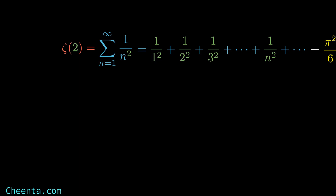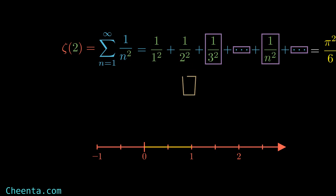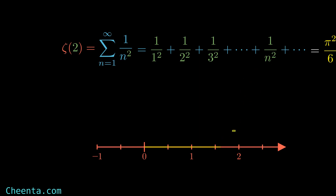To understand convergence, let's take a 1D axis and represent each term as a line with length equal to that term. As you can see, if I keep adding those terms as lines, it approaches a single point, and that particular point is what it converges to — in this case it's pi squared over 6, that blue point.